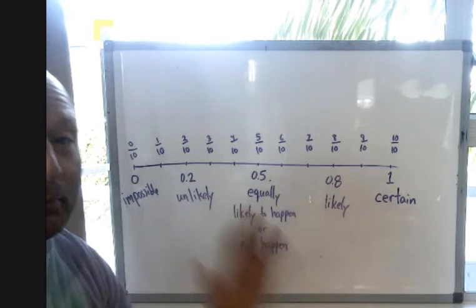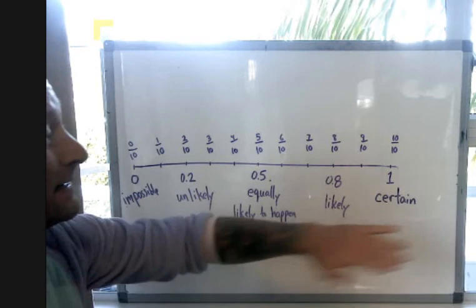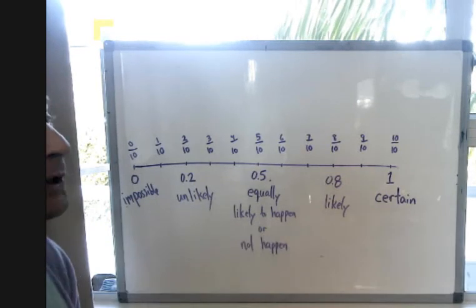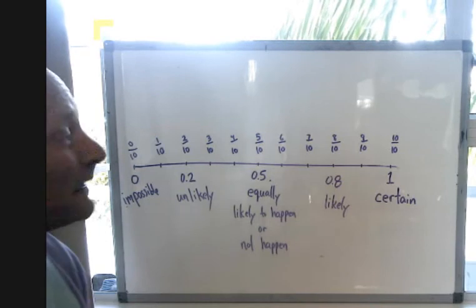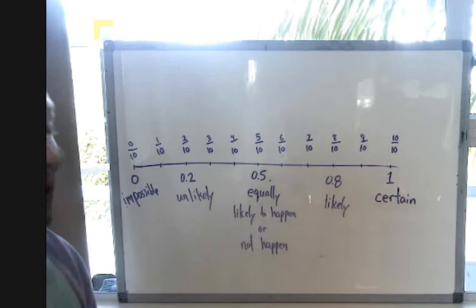At the other end, the biggest that a probability can be is one. That means the event is certain, guaranteed to happen. For example, the probability that somewhere in New Zealand, a child will be born today. It's guaranteed to happen. The probability is one.